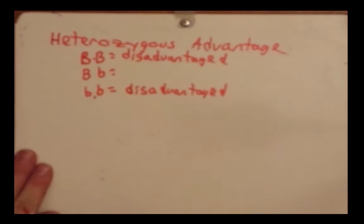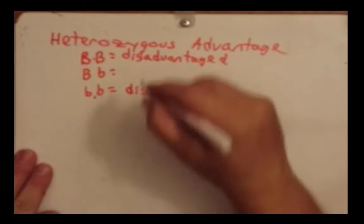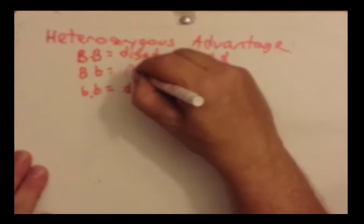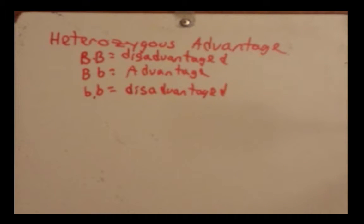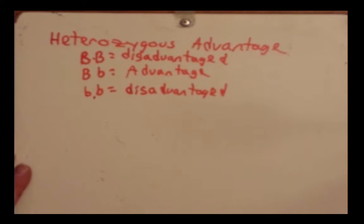One of the classic examples of heterozygous advantage is found in the disease sickle cell anemia. Let's talk about that a little bit.